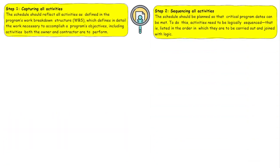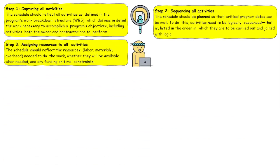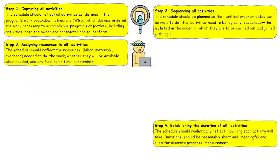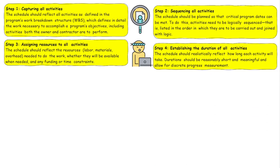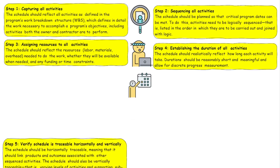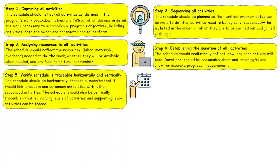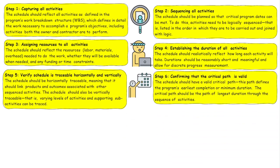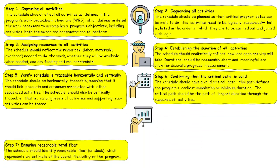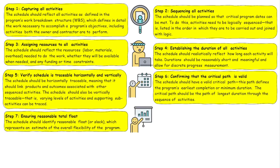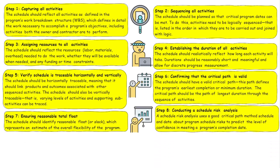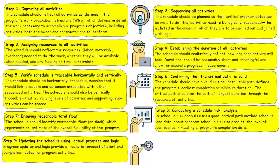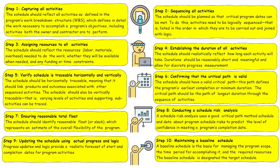The first step: capture all activities. The second step: sequence all activities. The third step: assign resources to all activities. The fourth step: establish the duration of all activities. Number five: verify the schedule is traceable horizontally and vertically. Number six: confirm that the critical path is valid. Number seven: ensure reasonable total flow. Number eight: conduct a schedule risk analysis. Number nine: update the schedule using actual progress and logic. And number ten: maintain a baseline schedule.